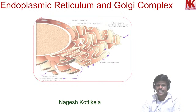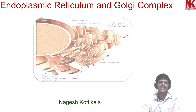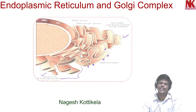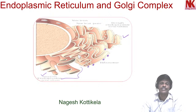Rough endoplasmic reticulum has a connection with the nuclear membrane — the outer membrane of the nucleus is connected with the rough endoplasmic reticulum. And the smooth endoplasmic reticulum is connected with the rough endoplasmic reticulum. This is how they are seen inside the cell.